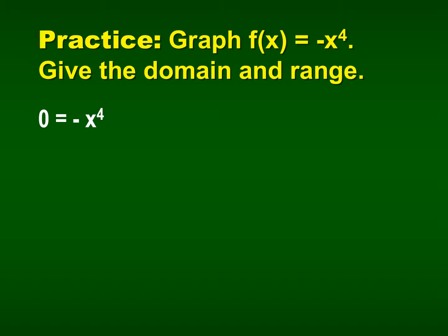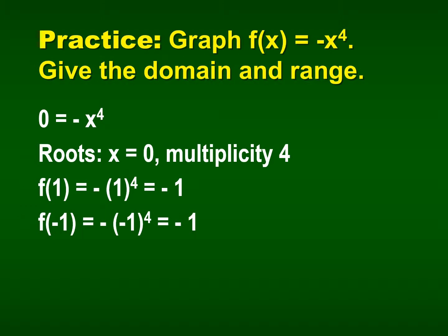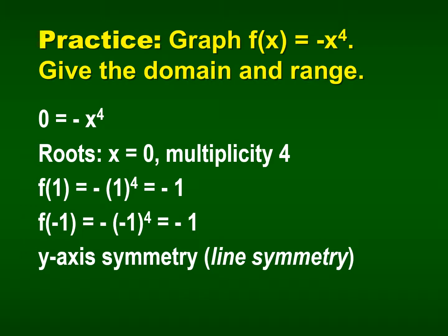When we graph it, we look at our zeros first. Our only root is x equals 0, because negative 1 times something to the 4th equal to 0 only works when x is 0. We have a degree of 4, so we need 4 roots. The only root is x equals 0, giving it a multiplicity of 4. The graph is a parabola with line symmetry across the y-axis.